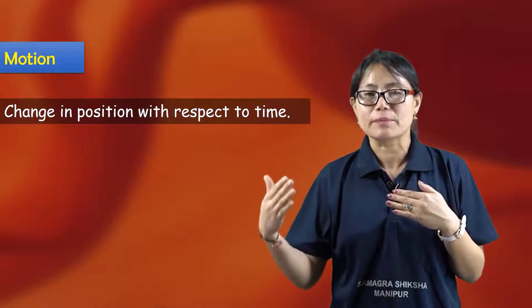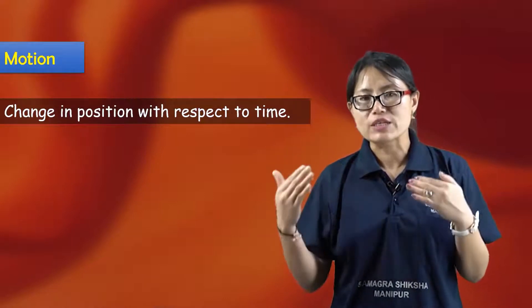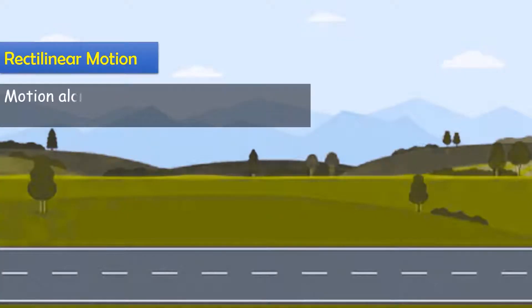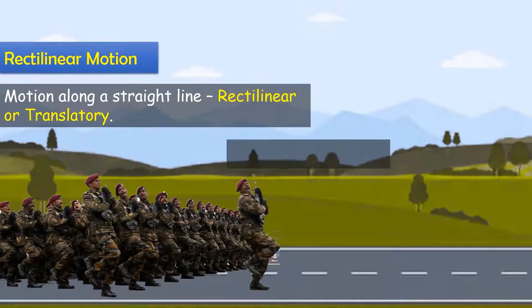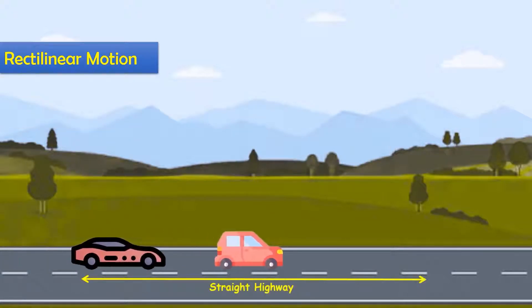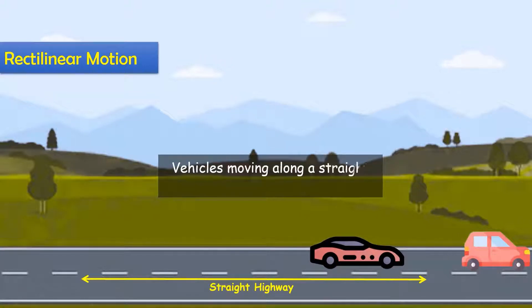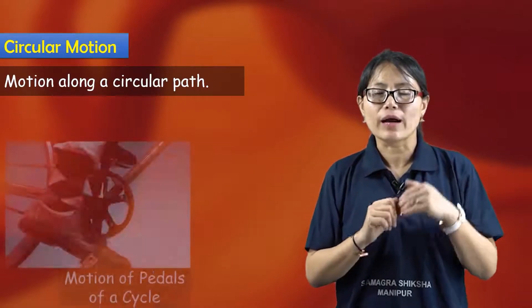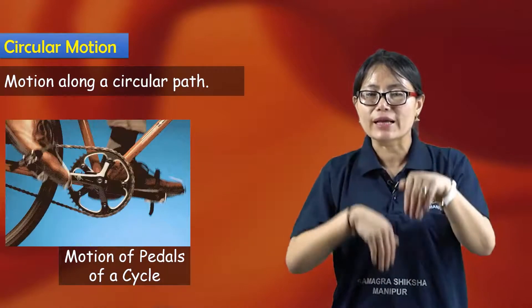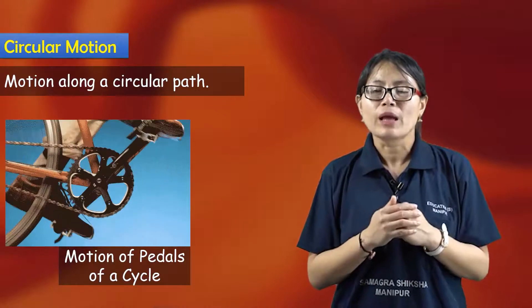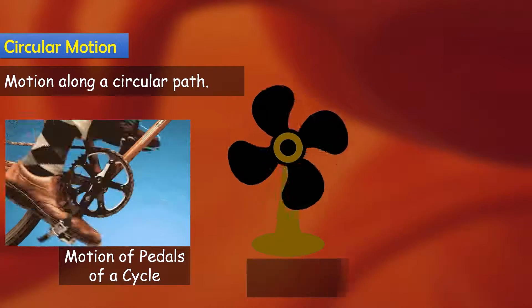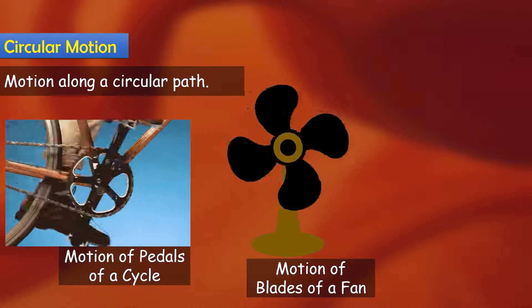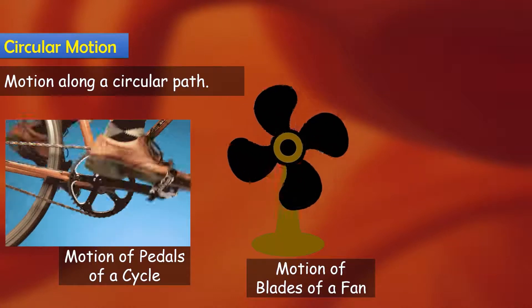Motion with respect to time which is called rectilinear or translatory motion. Examples are soldiers marching in a parade, vehicles on a straight highway. The second motion is circular motion, like the cycle pedals. When you pedal, the cycle moves, that is circular motion.